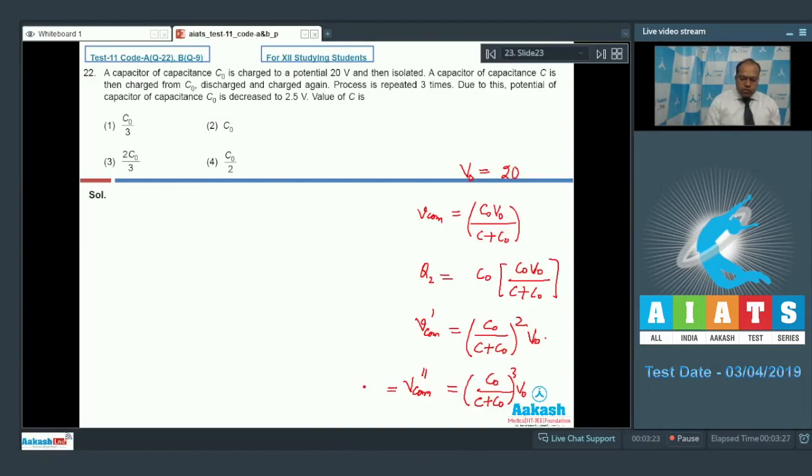Now this value is given in the equation that is 2.5V and the value of V0 is 20V. So if I take the ratio V0 upon V, so this is equal to C plus C0 divided by C0 raised to the power 3. The value of V0 is 20 and the value of V is 2.5. So this ratio comes out to be 8.